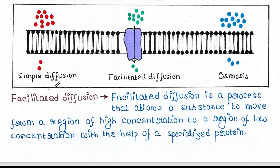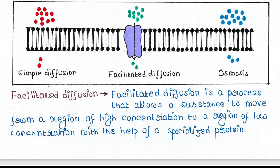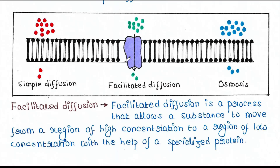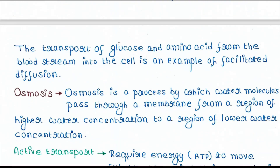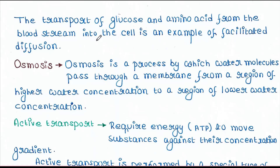Next is facilitated diffusion. Facilitated diffusion is a process that allows a substance to move from a region of high concentration to a region of low concentration with the help of a specialized protein. Unlike simple diffusion where no protein is required, in facilitated diffusion a protein is required. The transport of glucose and amino acids from the bloodstream into the cell is an example of facilitated diffusion.